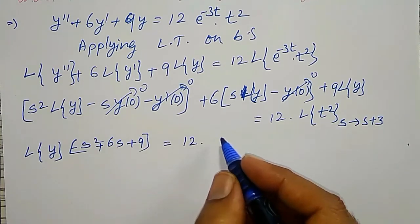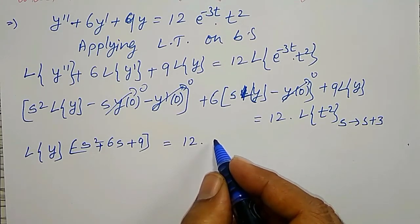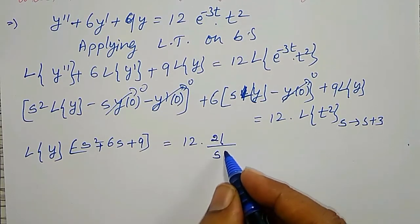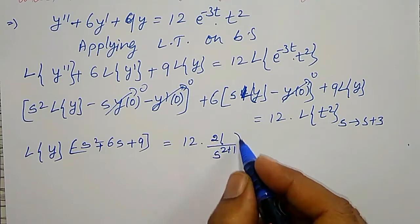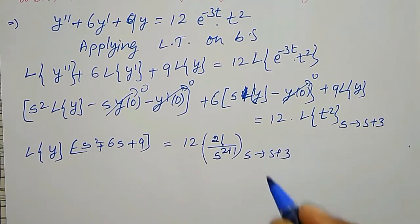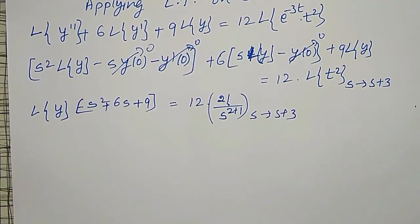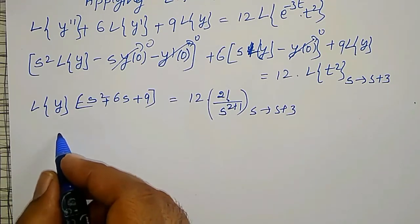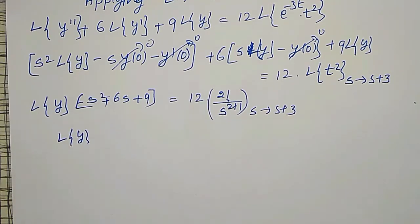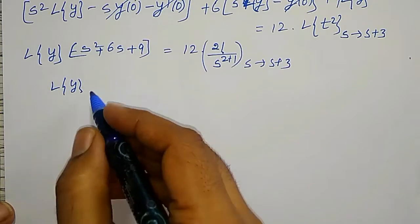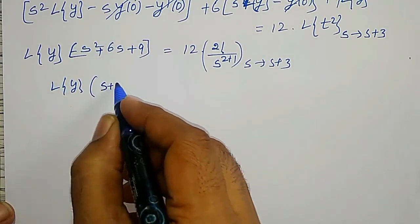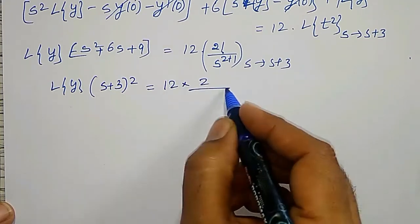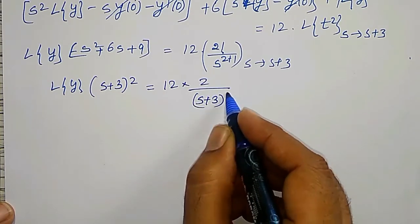L{t²} is 2 factorial divided by s to the power 2 plus 1, which is 2/s³, and here s is replaced by s plus 3. The bracket s² + 6s + 9 is a perfect square, so I can write L{y} times (s+3)² equal to 12 times 2 divided by (s+3)³.